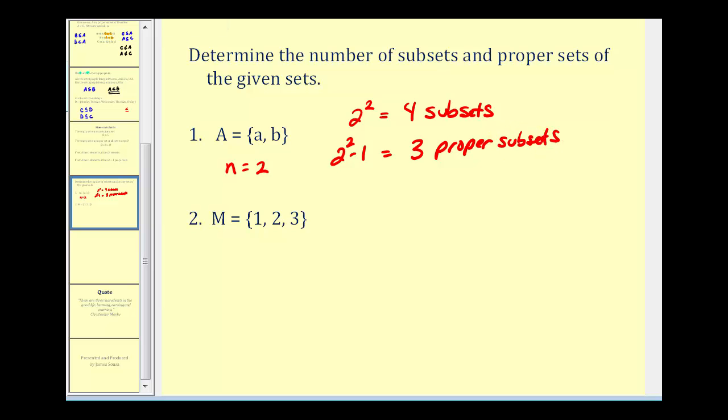Let's go ahead and list them for this example. Set B would be a subset if B contained the element a. Set C would be a subset if it contained the element b. Set D would be a subset if it contained the element ab. And then lastly, E would be a subset if it was the empty set. So notice we have 4 subsets. And then for the proper subsets, we'd have to eliminate set D because we couldn't use 2 sets that are equal to be proper subsets.